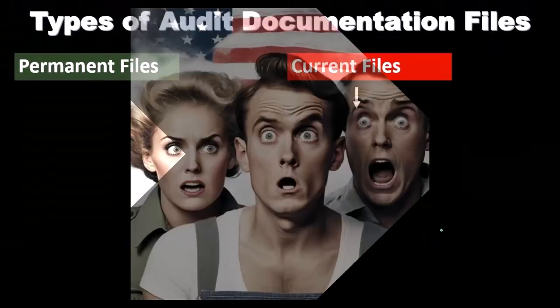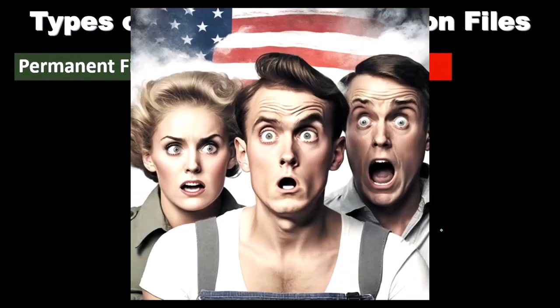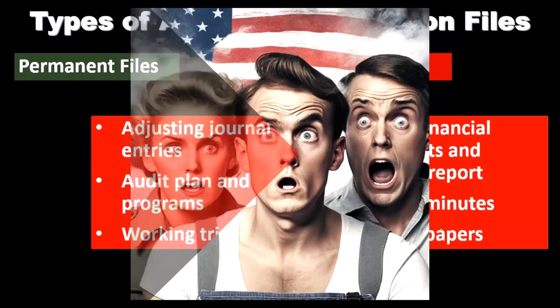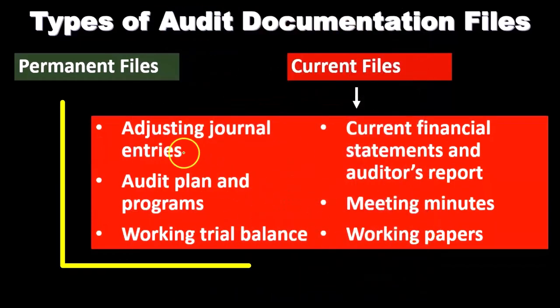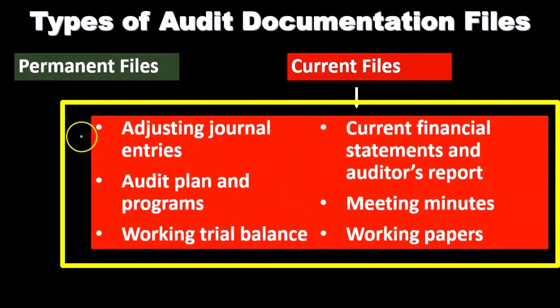When we think about the current file, we're thinking about those types of things that are going to happen in the current time period — so the current audit information that we're doing, often happening on a yearly basis. These are things that we might group on a yearly basis in terms of the current file that we are working with.